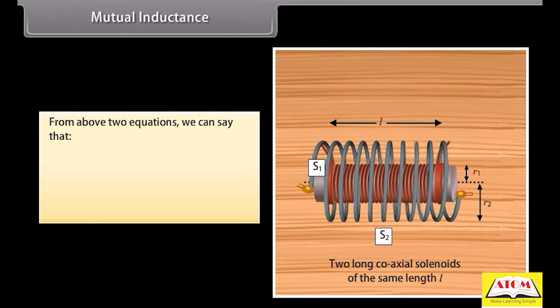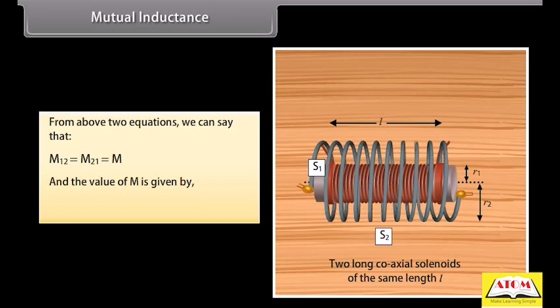From the above two equations, M12 equals M21, which equals M, and the value of M is given by mu₀ N1 N2 L pi R1².